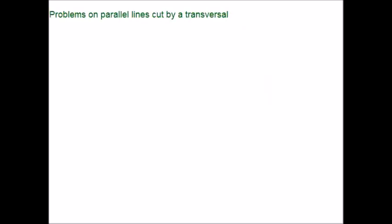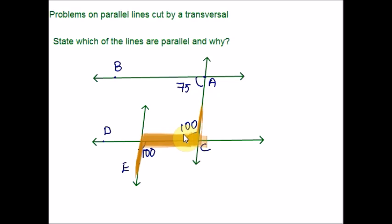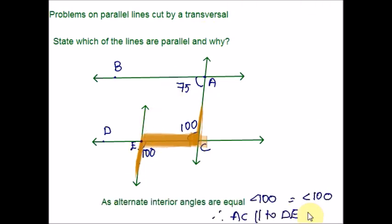Now let me take an example where you have to state which lines are parallel and give the reason. Compare the two lines and look at the angles — in one we have 75 and the other is 100, so there is no relationship between these two. But comparing the alternate interior angles, I can see a Z shape. Angles E and C are alternate interior angles, so AC is parallel to DE.